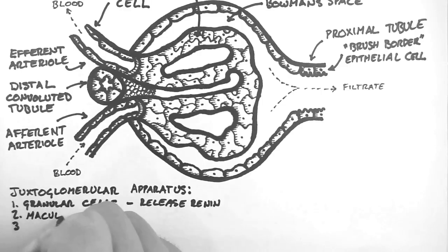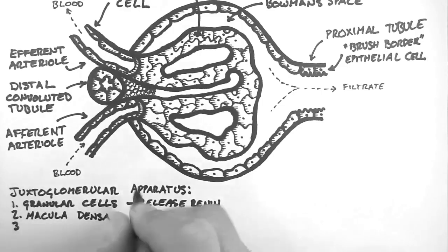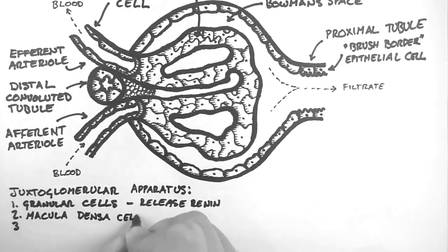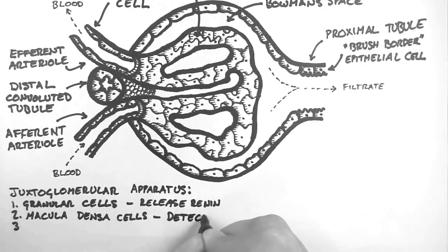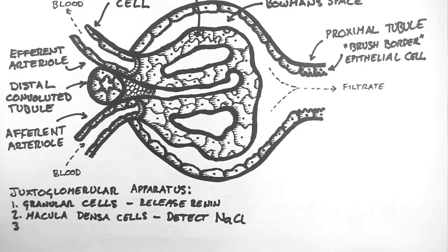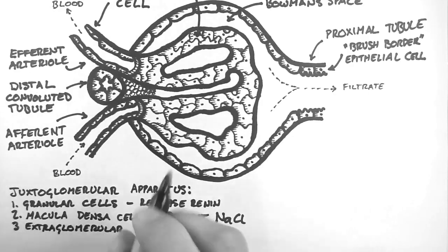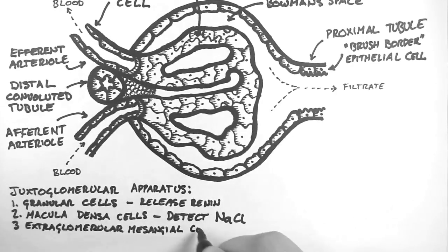The second type of cell is the macula densa cell. This is the cell that detects how much sodium chloride is passing through the distal convoluted tubule, and sends the signal to the granular cells to release renin. There are also extraglomerular mesangial cells, but the function of these is contentious.